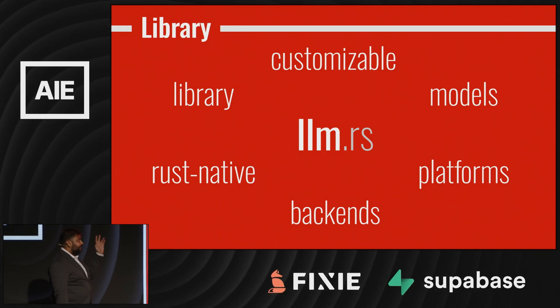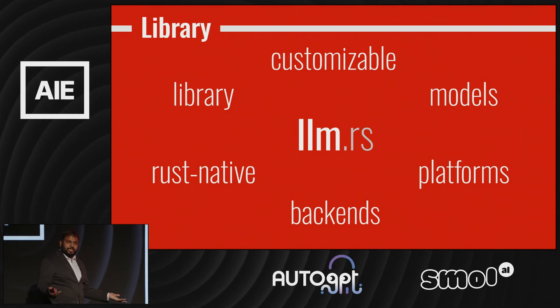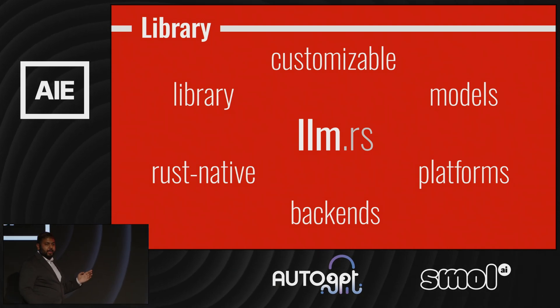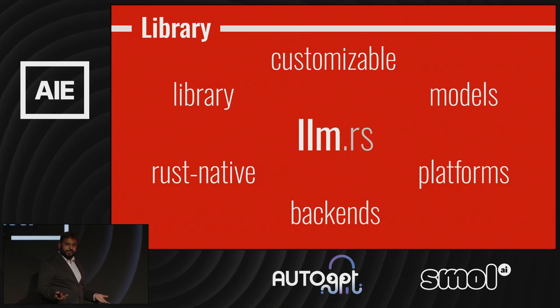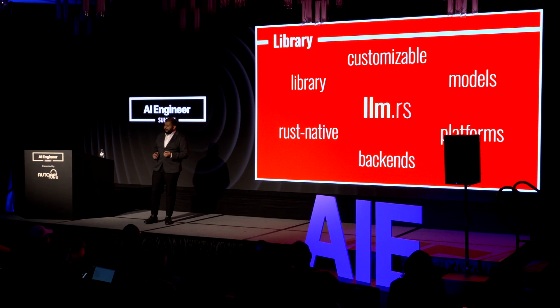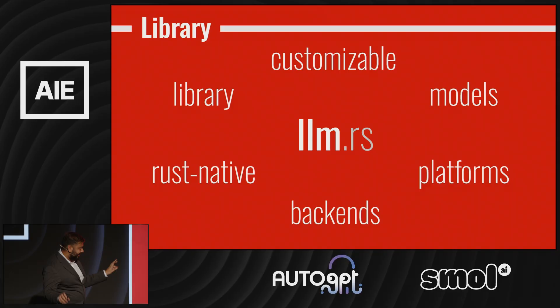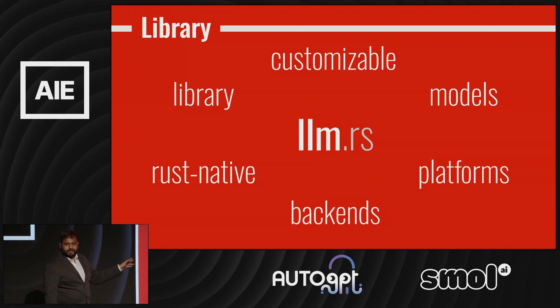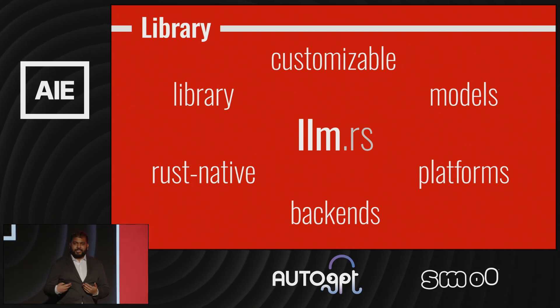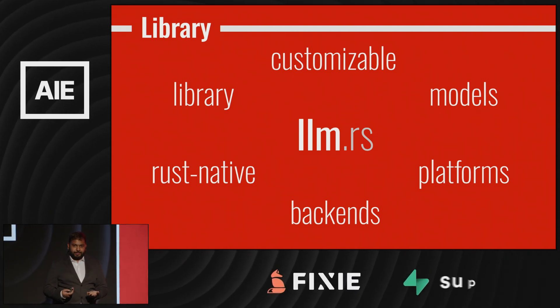It should support a multitude of model architectures — of course llama.cpp supports LLaMA and now Falcon, but clearly there are more out there. Next up, it should be Rust-native — it should feel like using a Rust library, not a library with bindings, and it should work how you expect a Rust library to work. Next, backends: it should support all possible kinds of backends — CPU, GPU, or your ML-powered toaster. And finally, platforms: it should work the same whether it's on Windows, Linux, macOS, or something else. You shouldn't have to change it significantly to make it work, because deployment has always been an issue.